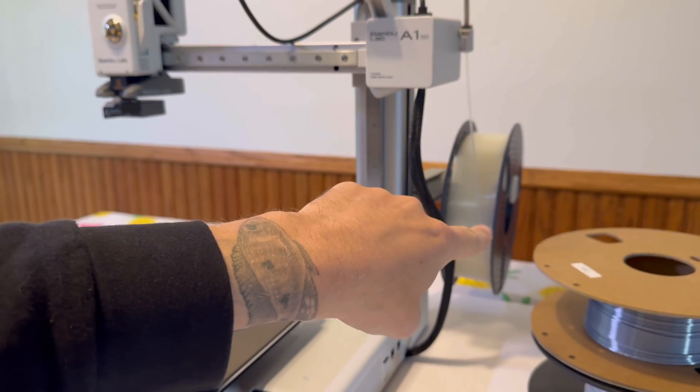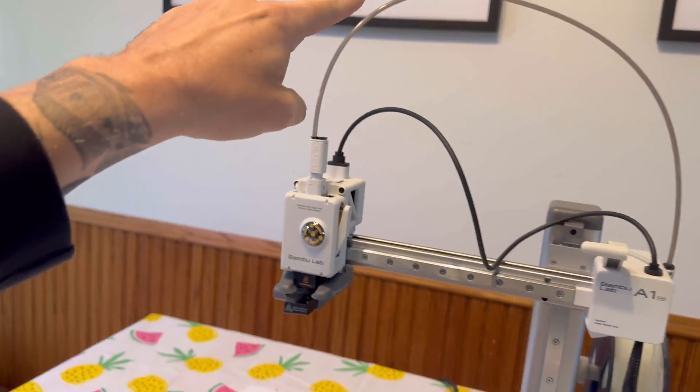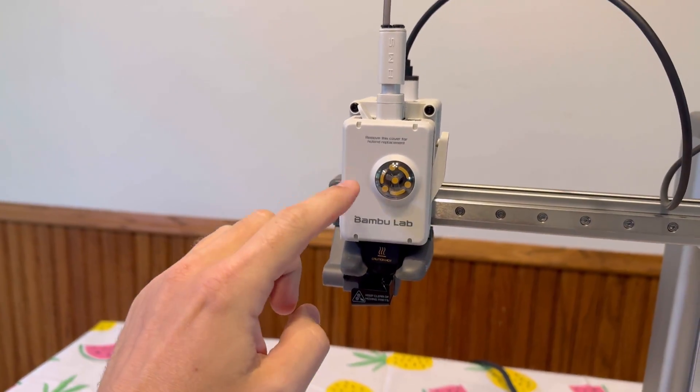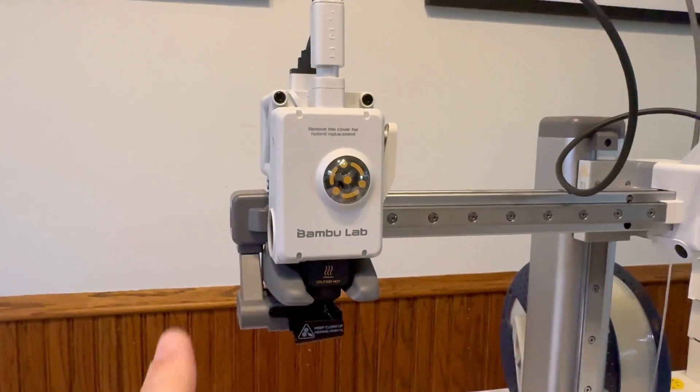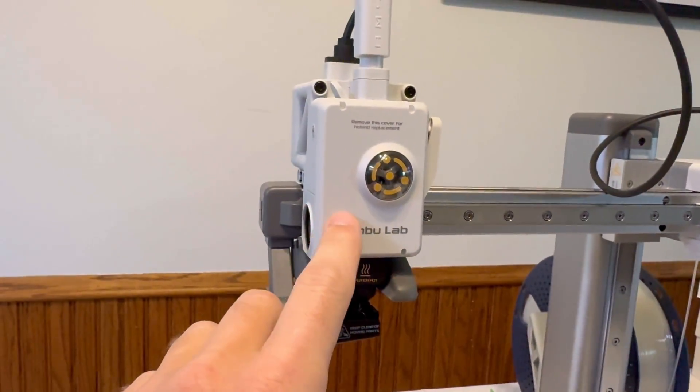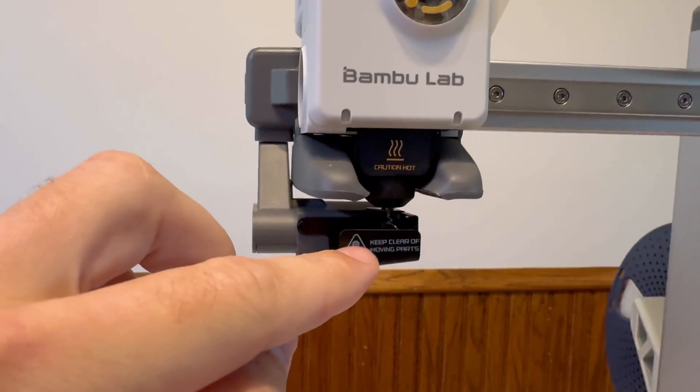So what happens is the filament comes from over here, goes up the PTFE tube, goes down into the extruder and through the nozzle. I'm going to show you how to take apart this head unit because chances are it's not an extruder problem but actually a filament issue.